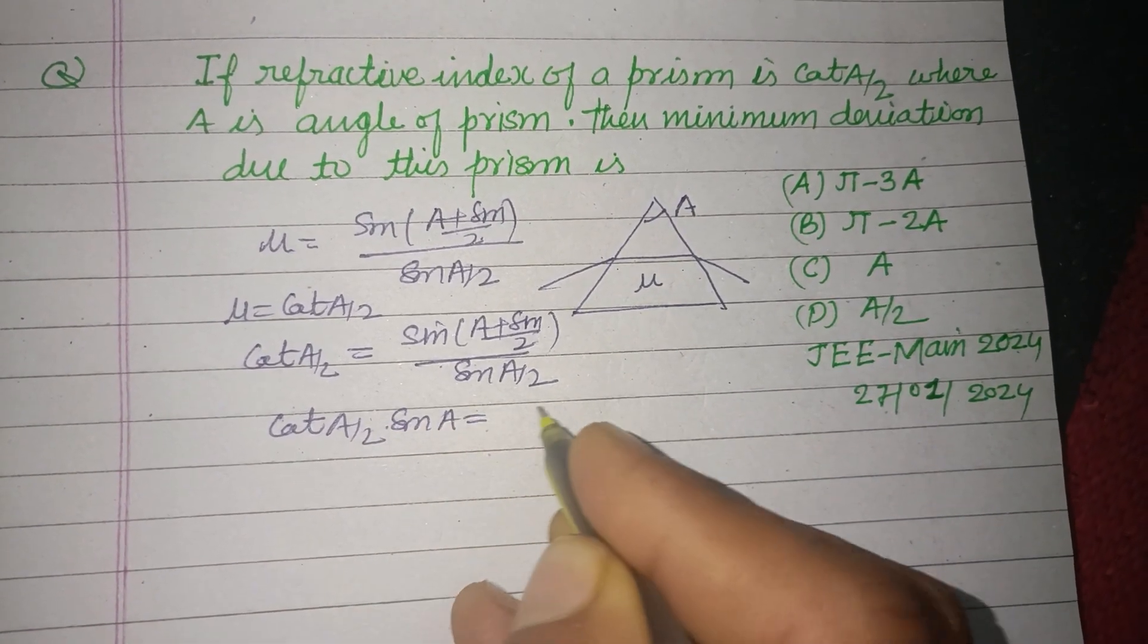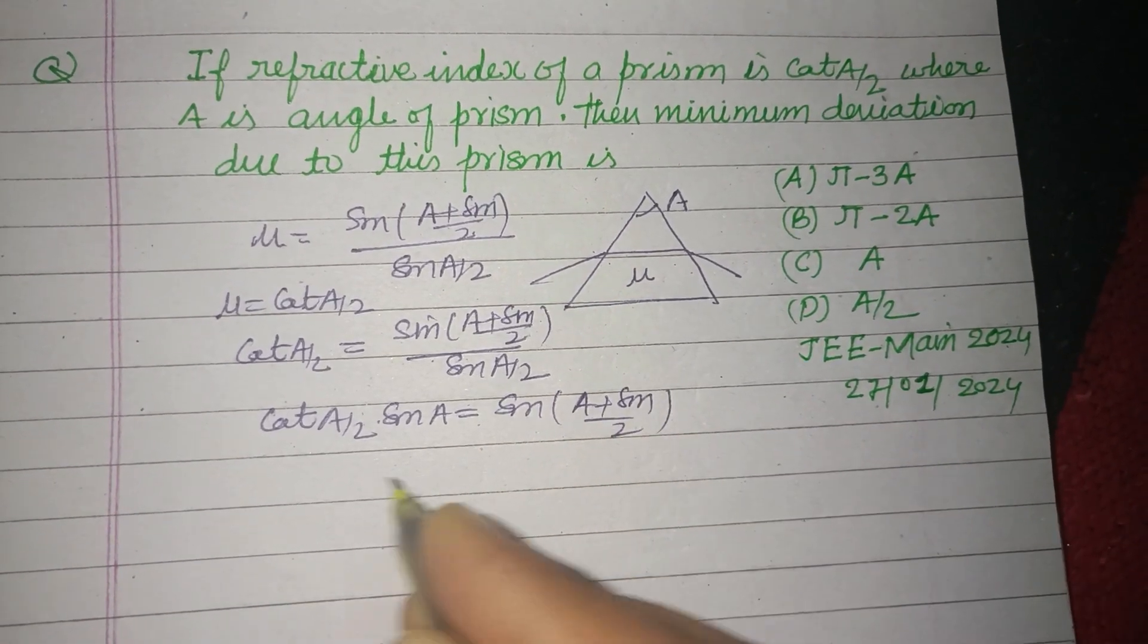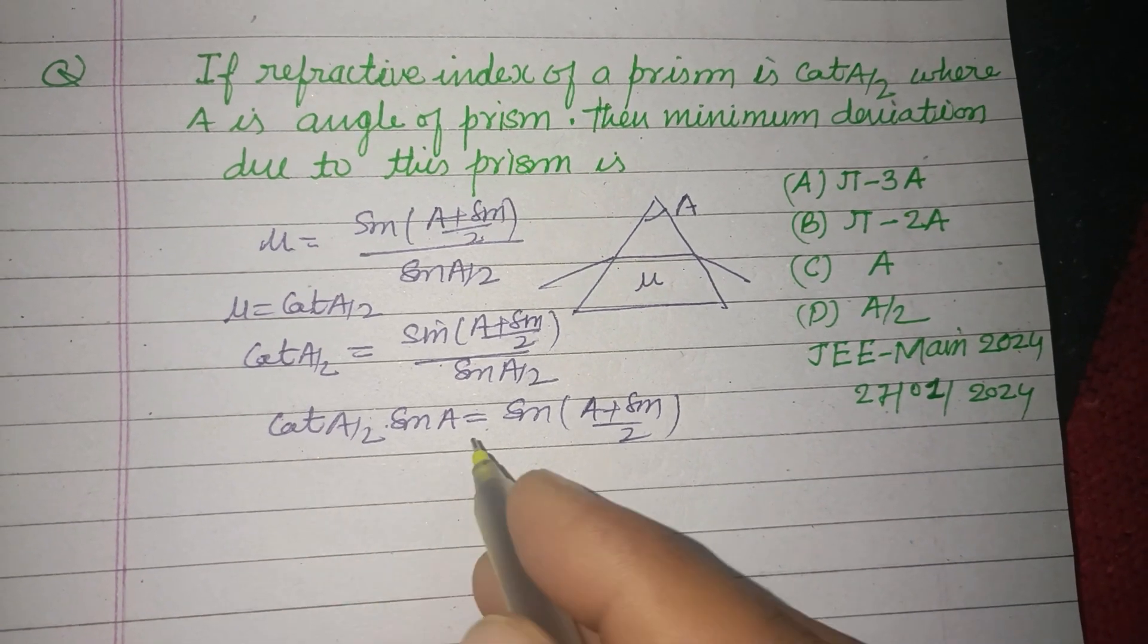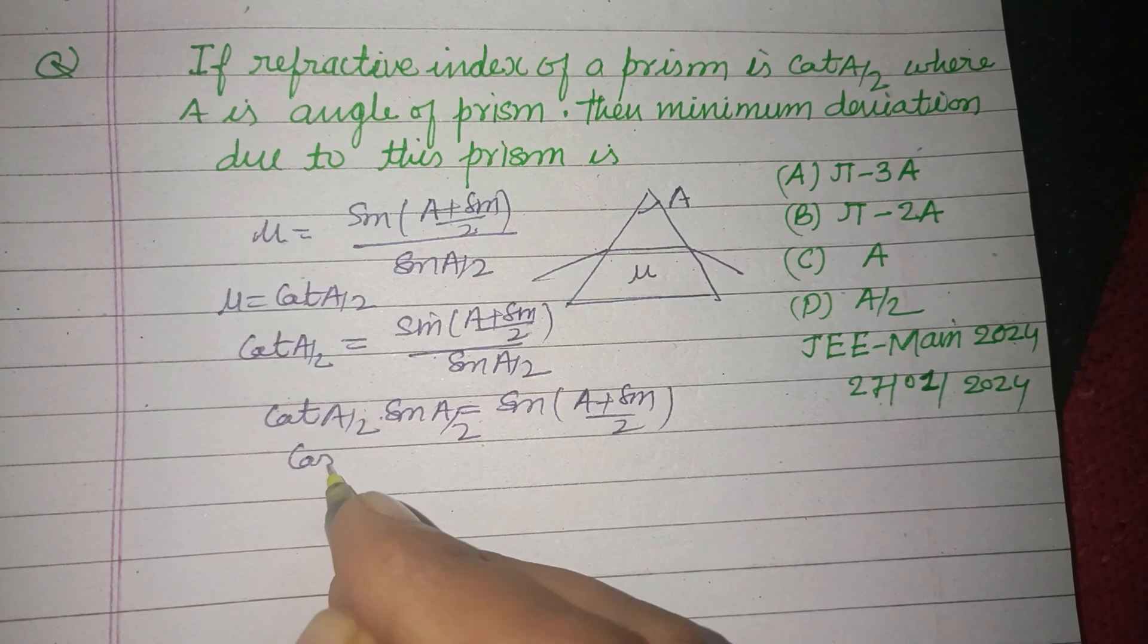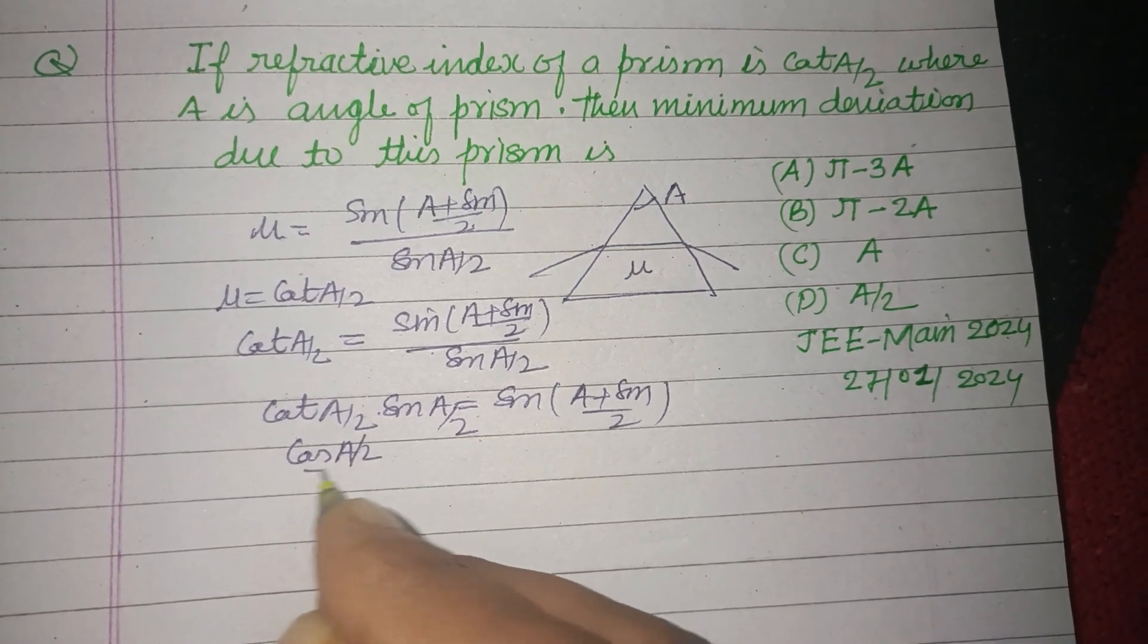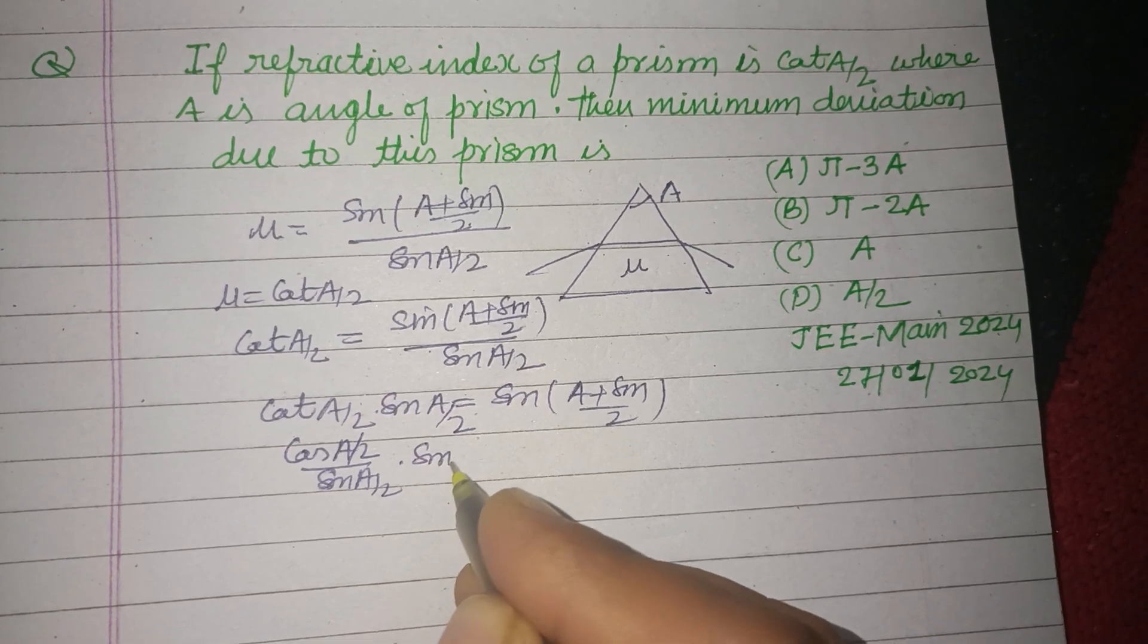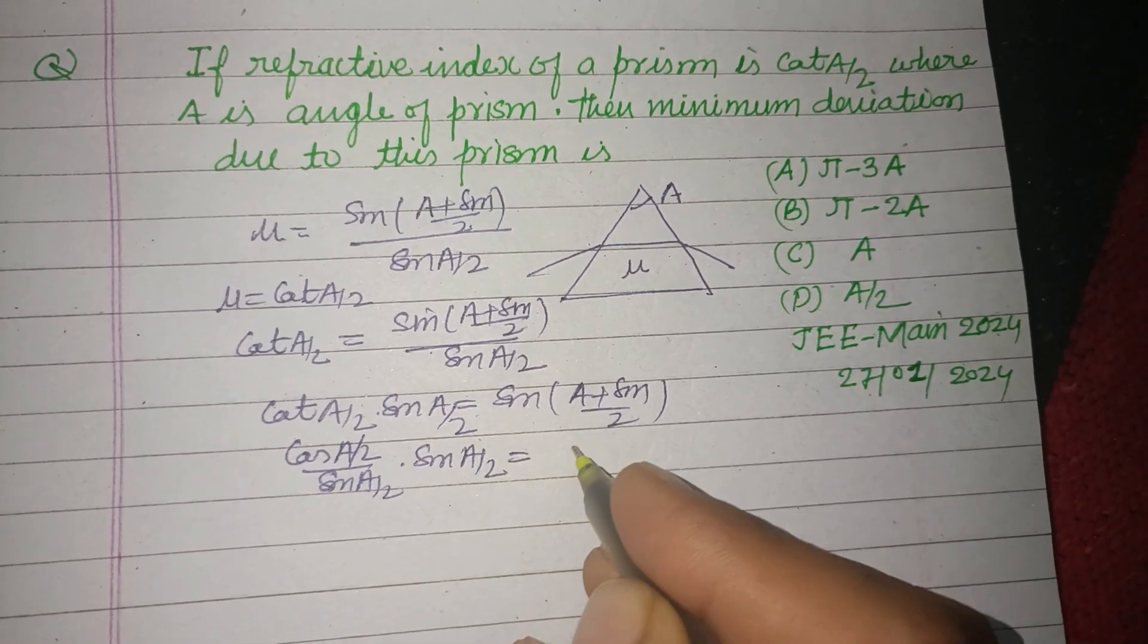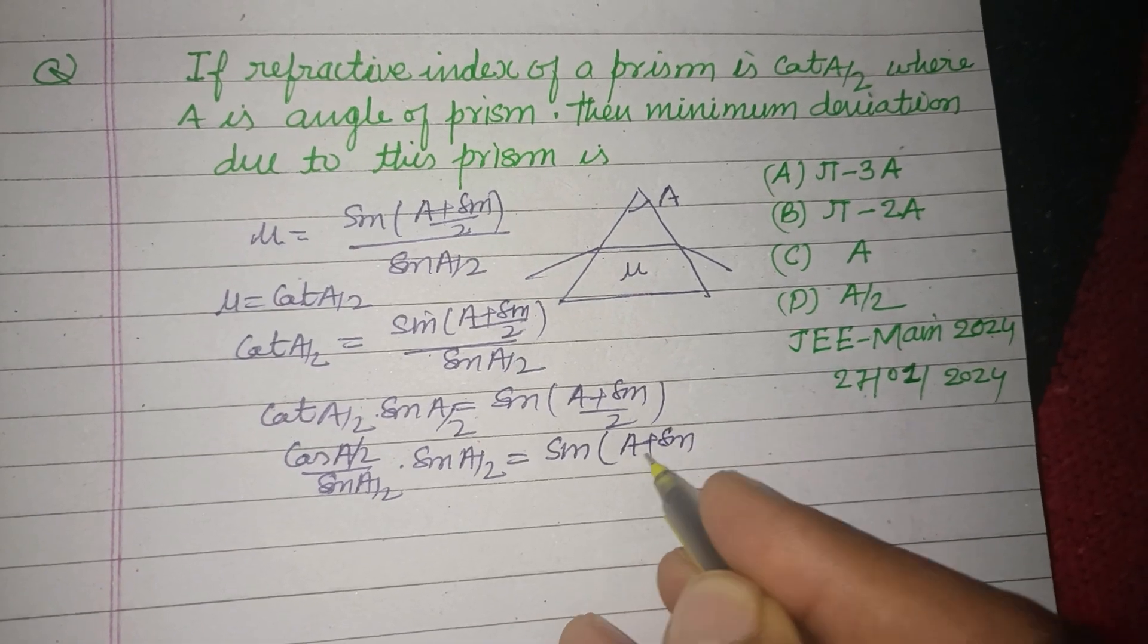Here cot(A/2) can be written as cos(A/2) over sin(A/2). So cos(A/2) over sin(A/2) times sin(A/2) equals sin(A plus δm by 2).